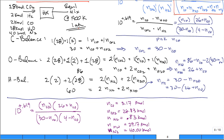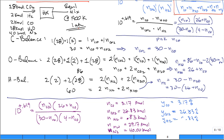If you want the mole fractions, sum all species: 3.17 + 26.83 + 0.83 + 29.17 + 40 = 100 kilomoles total. So the mole fractions are simply the percentages: Y_CO = 3.17%, Y_CO2 = 26.83%, Y_H2 = 0.83%, Y_H2O = 29.17%, Y_N2 = 40%. That's the final answer.